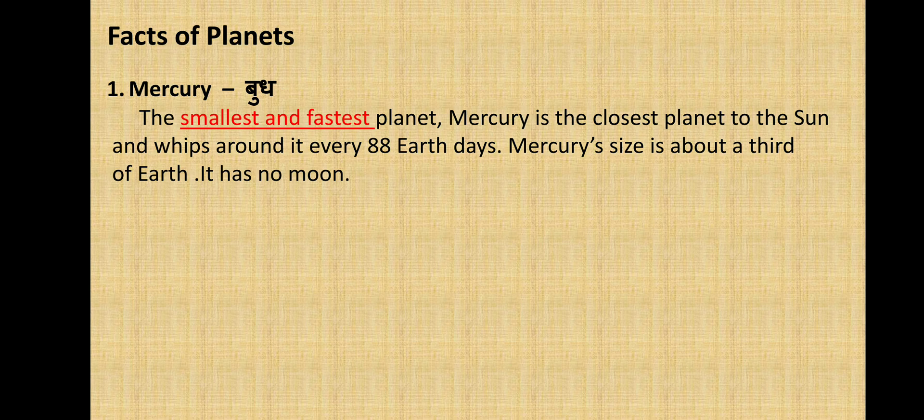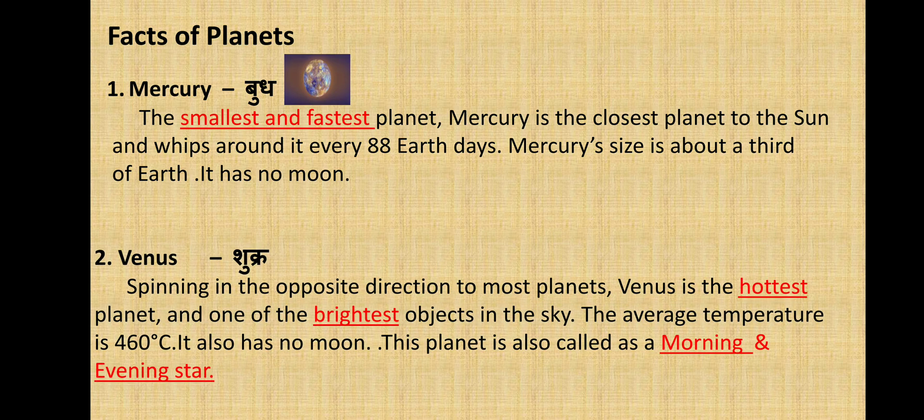Let's look at some facts about these planets. First is Mercury, also known as Budh. Mercury is the smallest and the fastest planet. It is the closest planet to the sun and orbits around it every 88 Earth days. Mercury's size is about a third of the moon, and it has no moon. This is the smallest planet in our solar system.